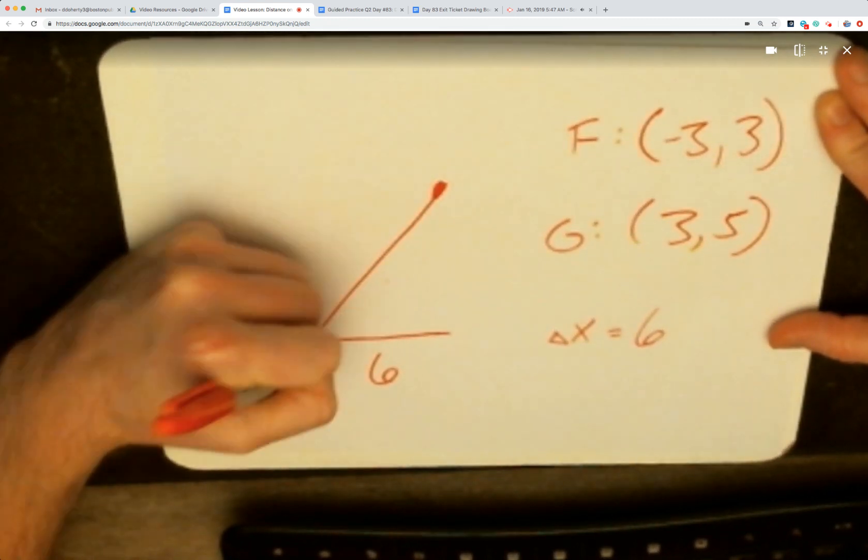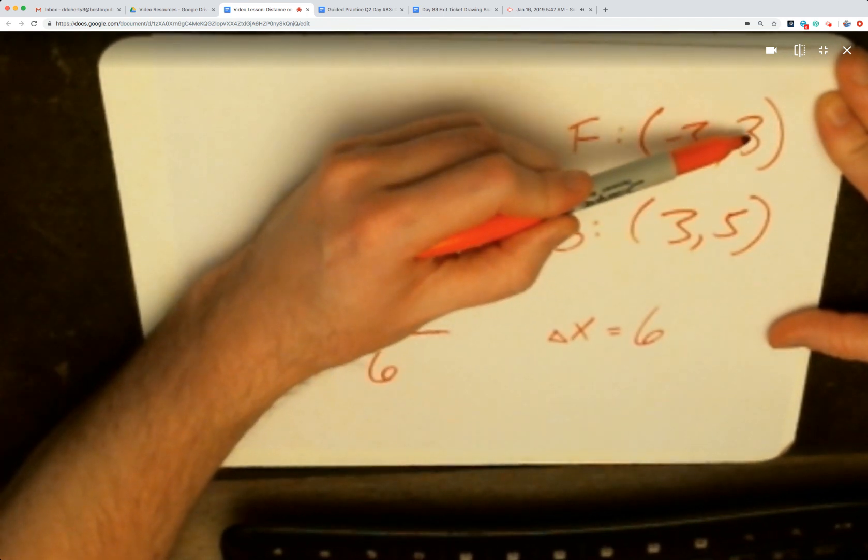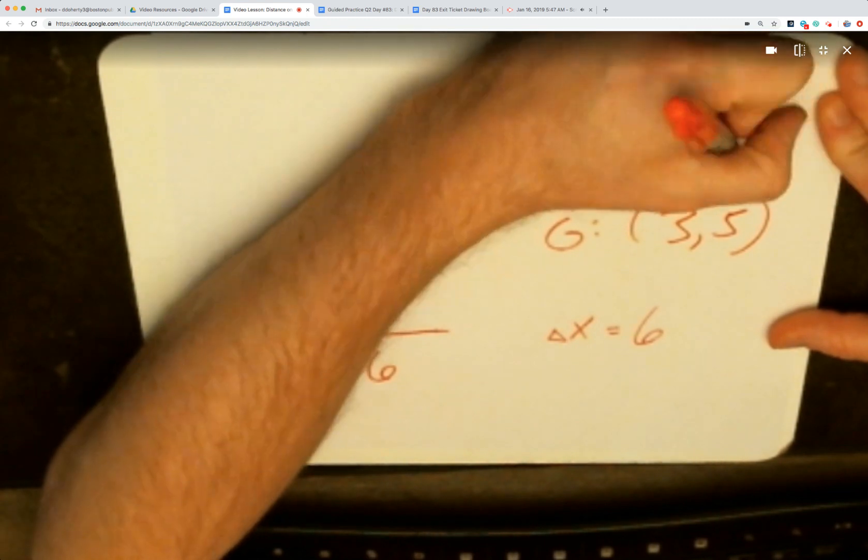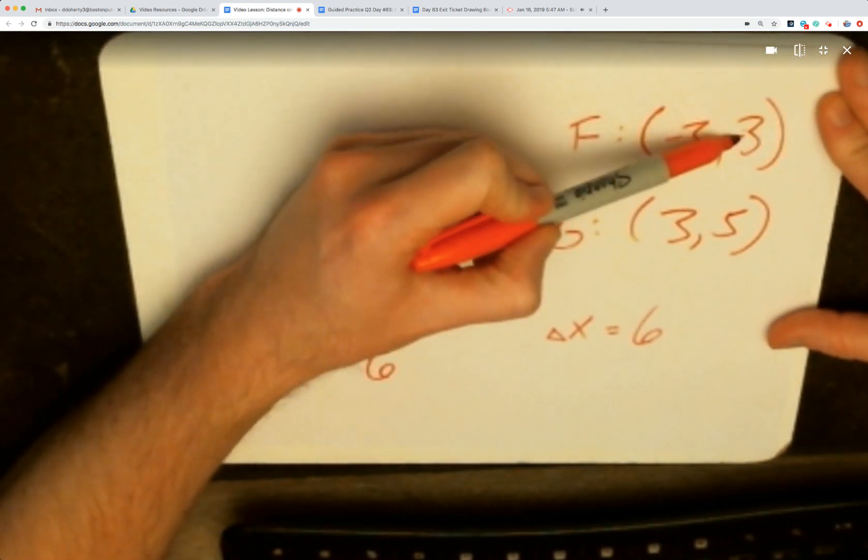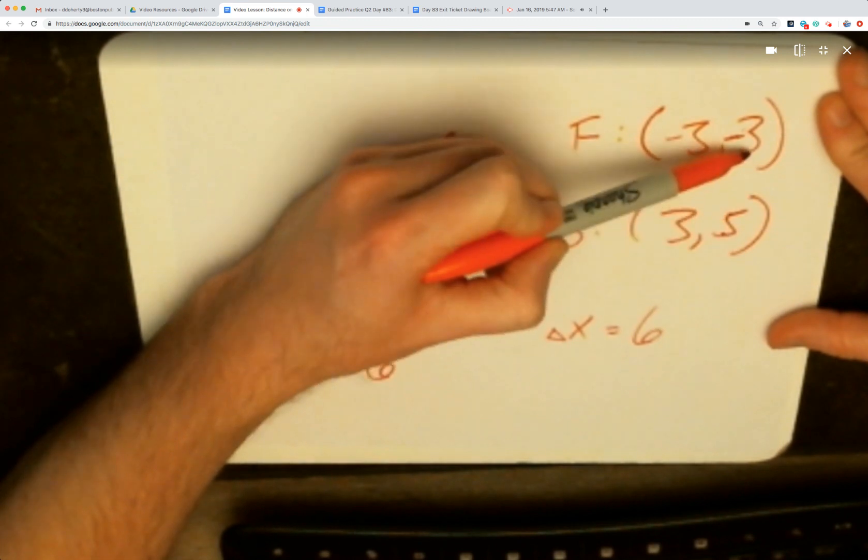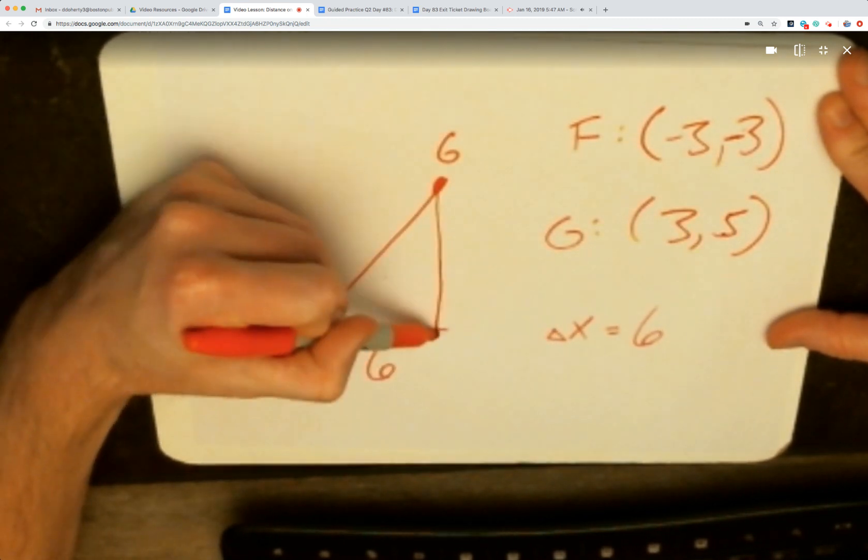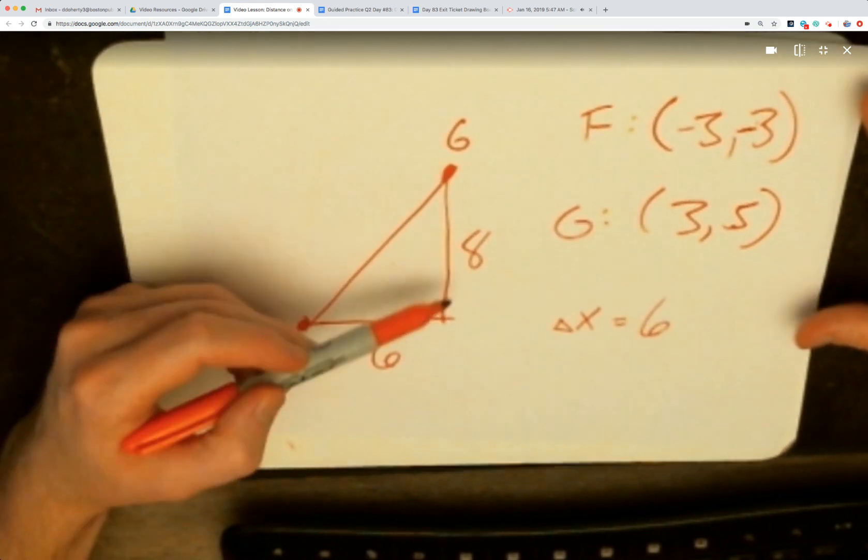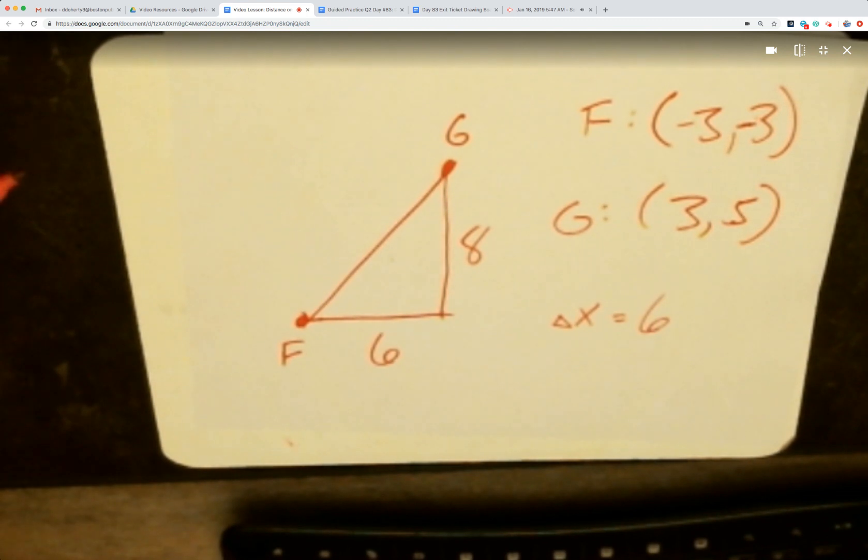And the Y value changes from—oh sorry, that was a -3 that I didn't write down correctly, got to double check your work—the -3 to +5 goes up by 3 units to get to 0, 5 more to get to +5. 3 and 5 gives me a total of 8 when we go up and down.